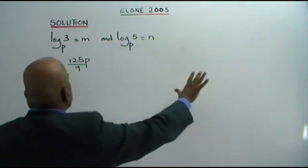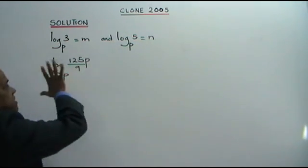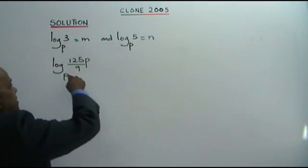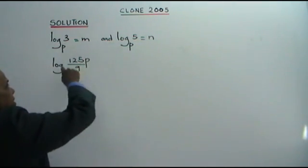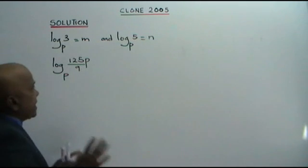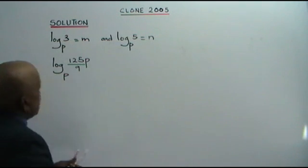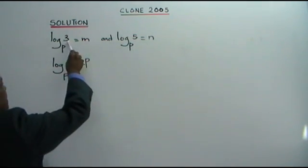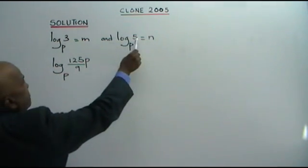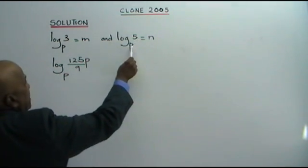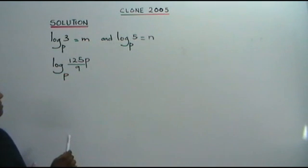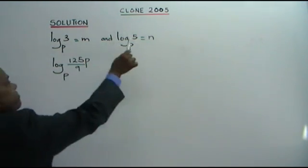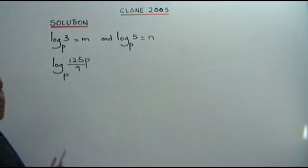Now, when you get this type of question, this number that you get here — break it up into these numbers: 3, 5, and P — which are the components of the base P expression.